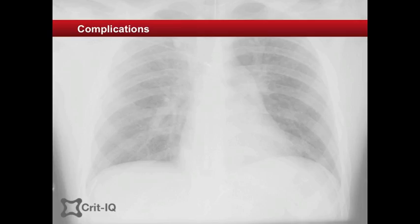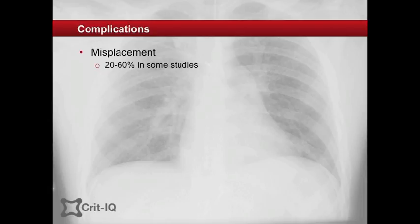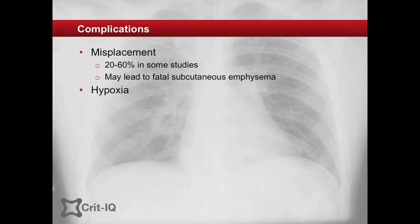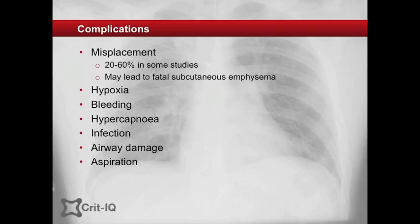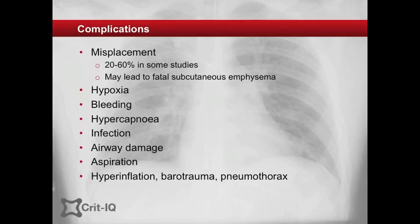The main complication of this method is misplacement of the tube. Studies have demonstrated a failure rate ranging from 20 to 60% for this technique. Inflation in this position may lead to gross surgical emphysema, rendering all other salvage methods virtually impossible. In addition, inadequate oxygenation, bleeding, hypercapnia, infection, airway damage and aspiration are potential complications. Insufficient exhalation may also lead to hyperinflation that can result in hemodynamic instability and barotrauma. A high level of vigilance for the development of pneumothorax is necessary.